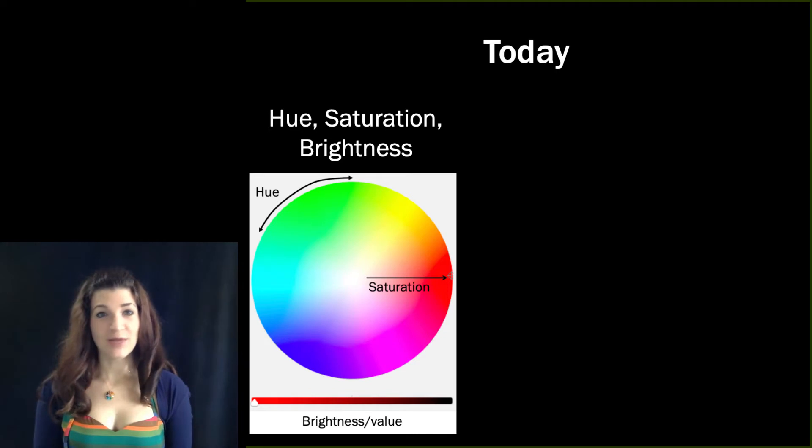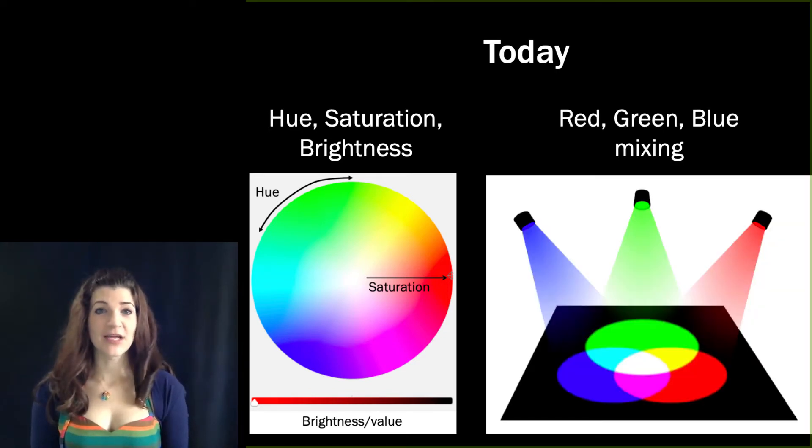Specifically, we're going to explore the model of hue, saturation, and brightness, as well as talk about how all colors can be made from a combination of red, green, and blue light mixing.